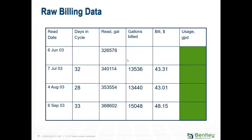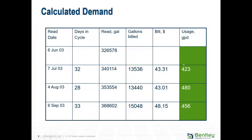Raw billing data shows when the meter was read, the current reading compared to the previous reading, and how many gallons were consumed in that period, along with what the person paid. You can calculate usage by dividing the number of gallons billed by the days in that billing cycle — that gallons-per-day figure is the number we're actually interested in for each customer.